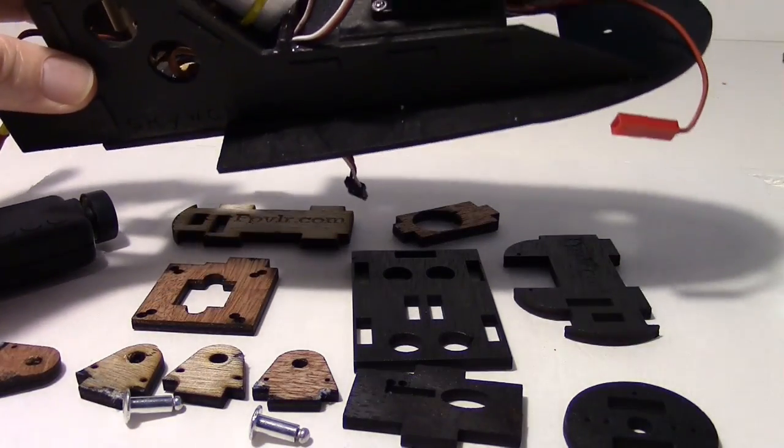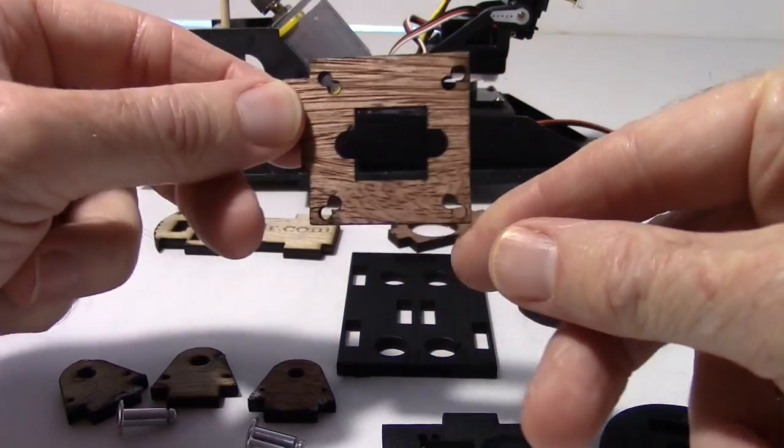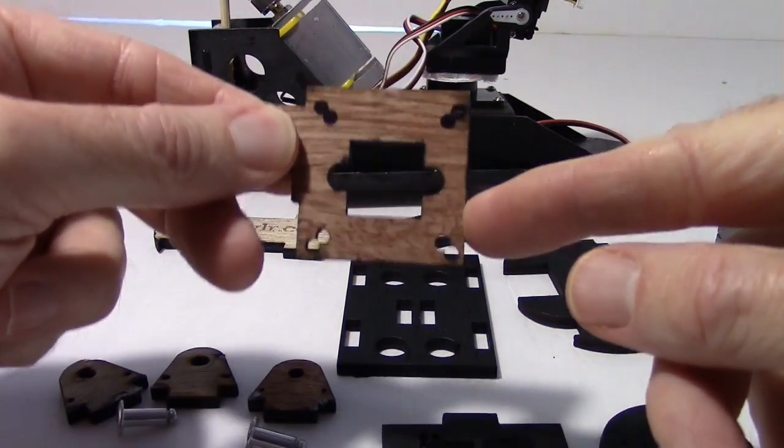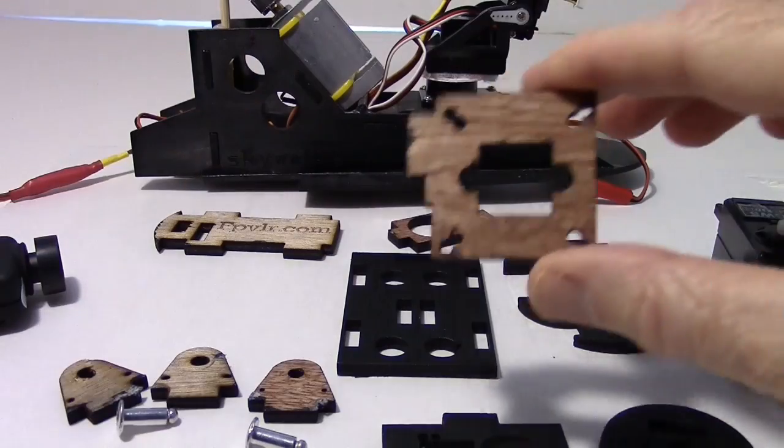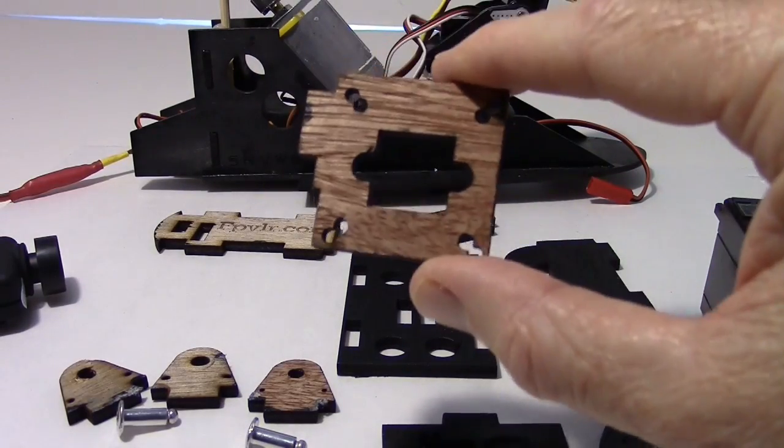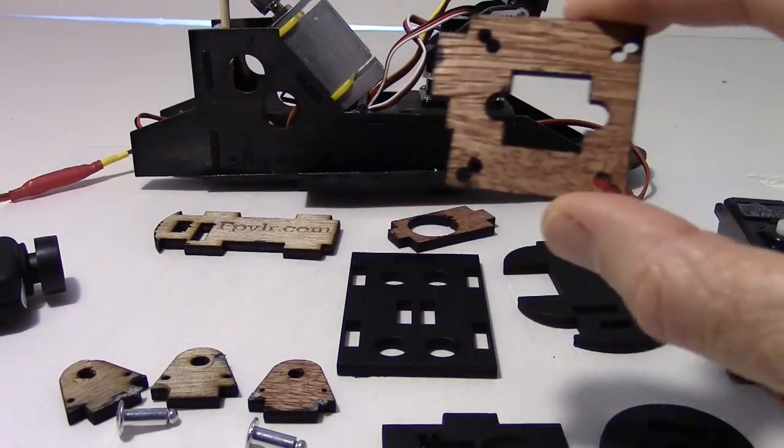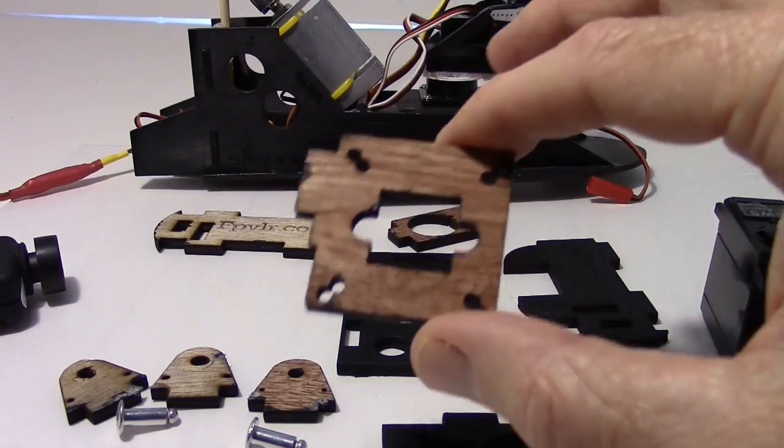It also has this little mount here that you can put a board camera on. So you can have the Mobius and a board camera for FPV. So it actually holds two cameras and pan and tilts them both.